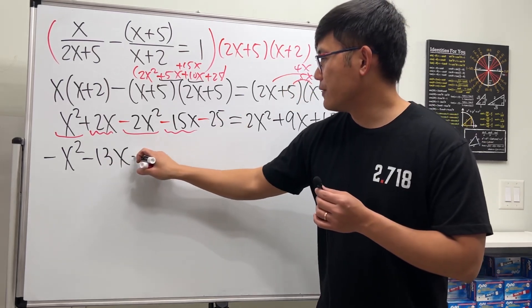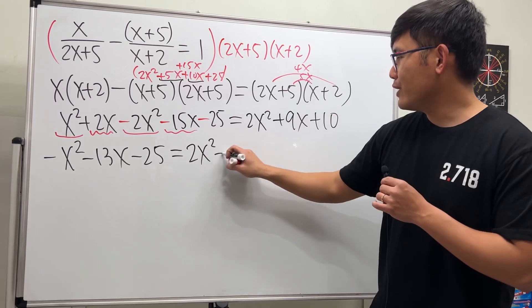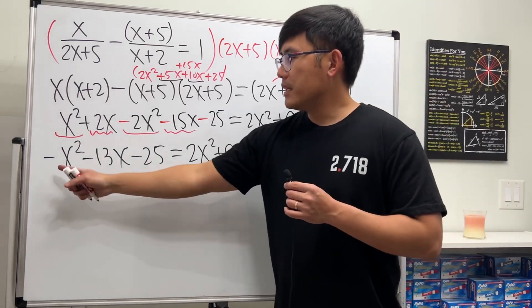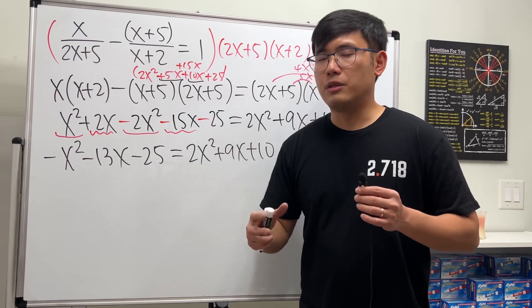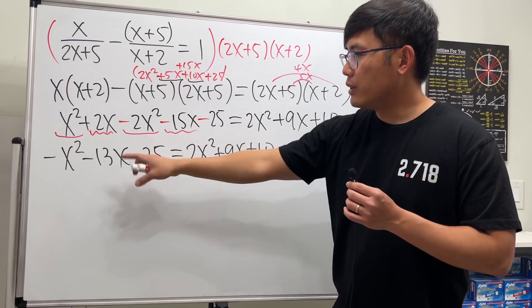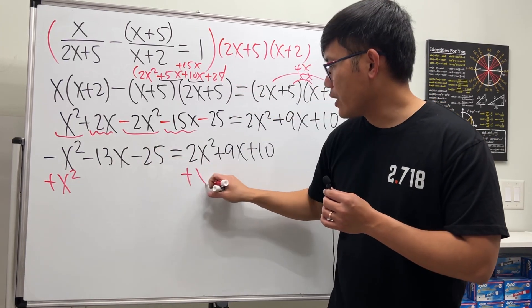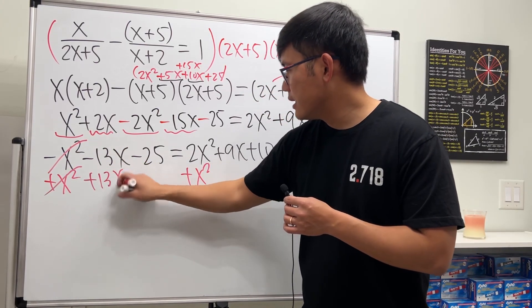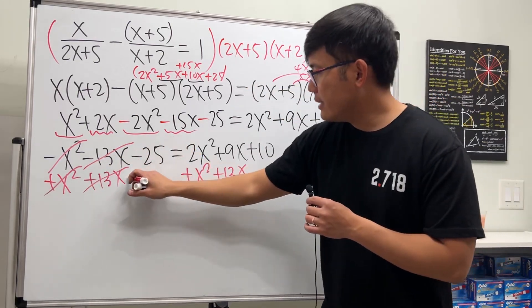And then minus 25, and with that we have equal to all this. So let me write it down: 2x squared plus 9x plus 10. Okay, because this is negative x squared, this is positive 2x squared—we like to keep the x squared term positive. So let's move these things to the other side. We'll try to get one side equal to zero. So let's add x squared so that this and that cancel, and then right here we'll add 13x, and also do the same thing here: 13x. So this and that cancel, and then plus 25, plus 25, plus 25.